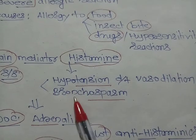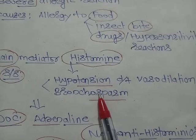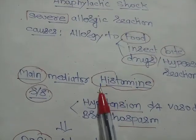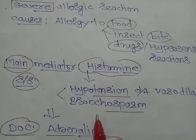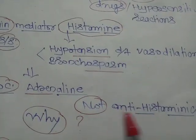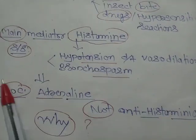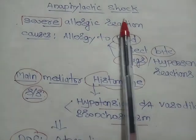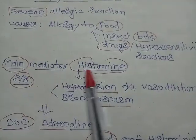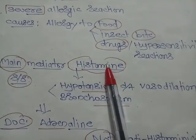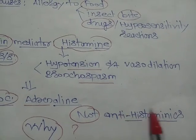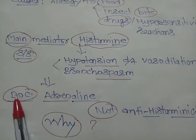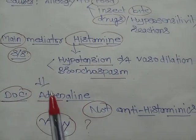Histamine causes vasodilatation, leading to hypotension, and bronchospasm. Since the main mediator is histamine, why are antihistaminics not the drug of choice? Why is adrenaline the drug of choice in anaphylactic shock instead?